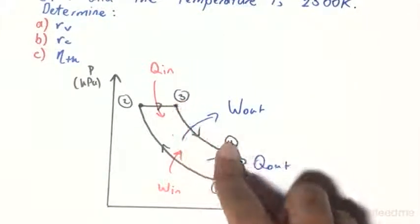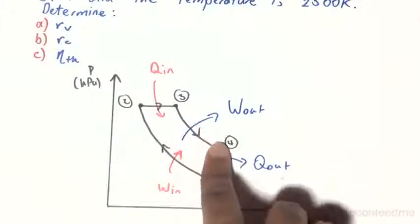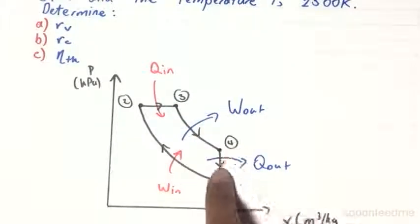Process 3, 4 is going to be the main work output, and that will be an isentropic expansion. Then finally we have an isotropic heat expulsion from the system.